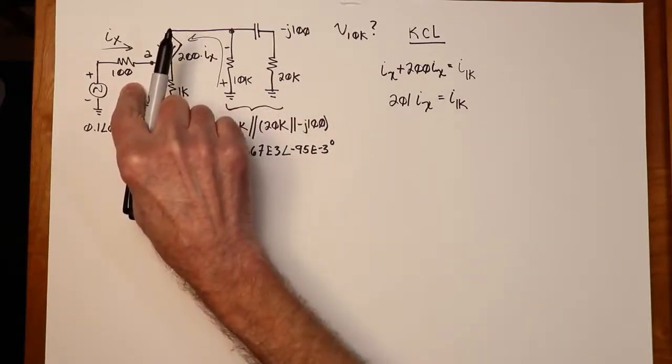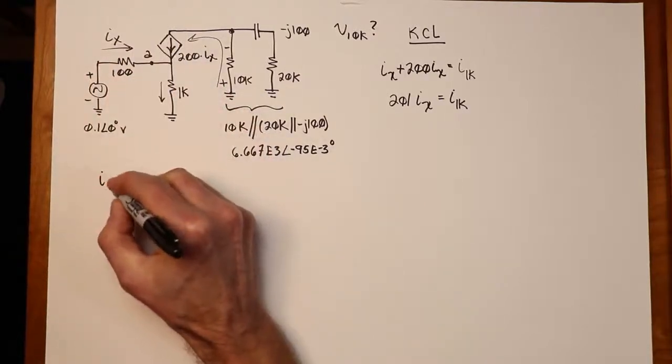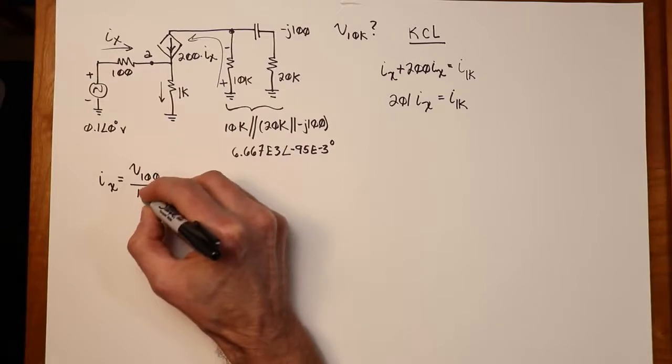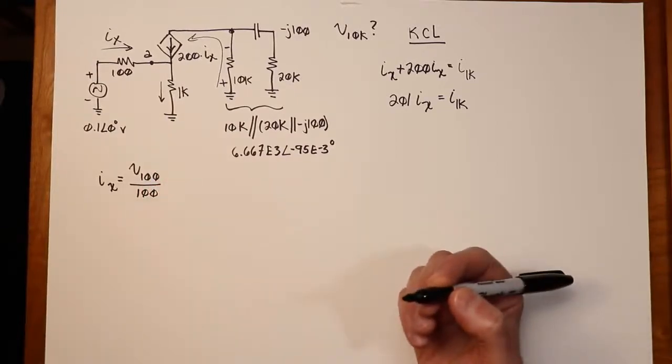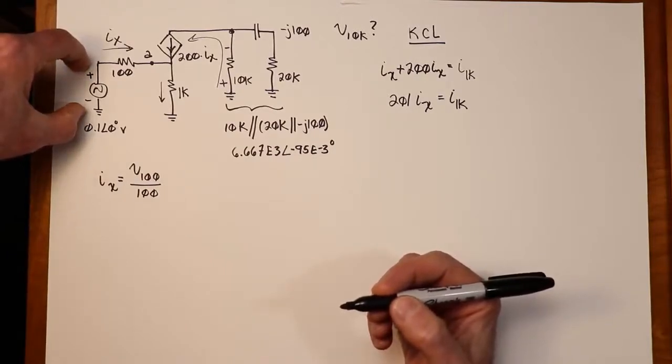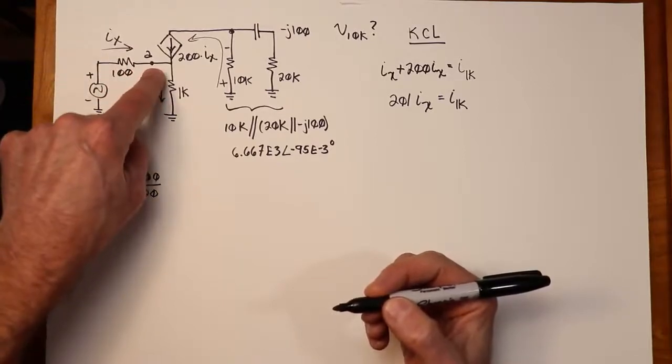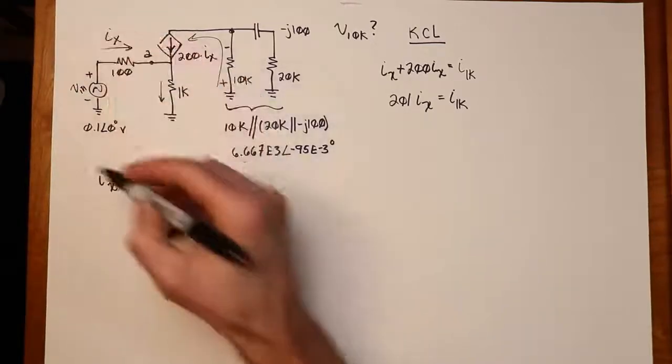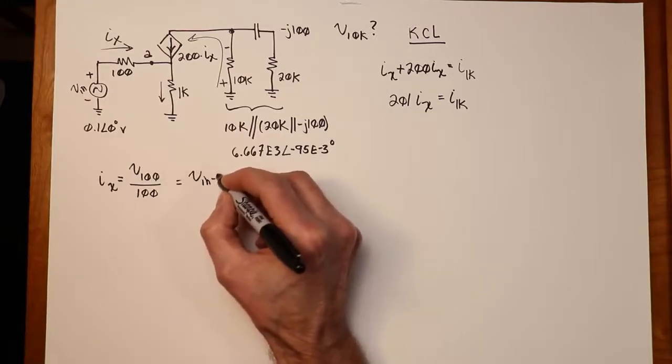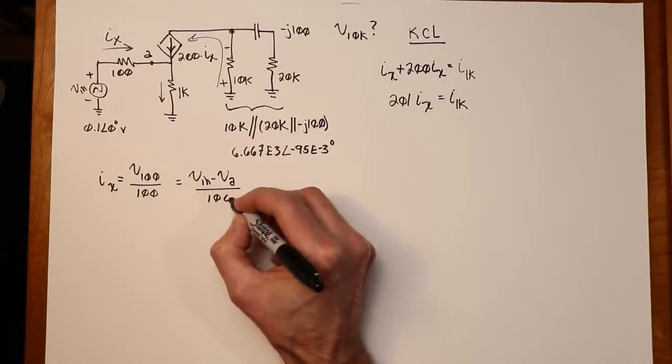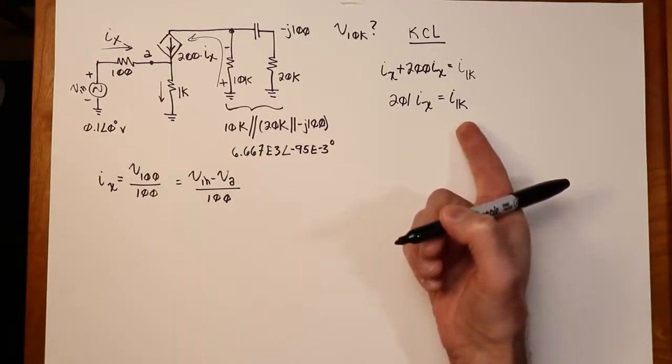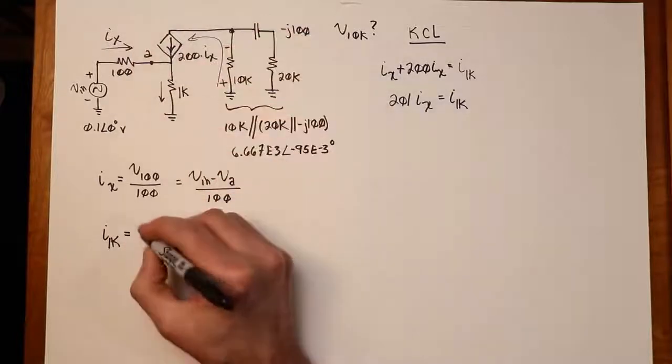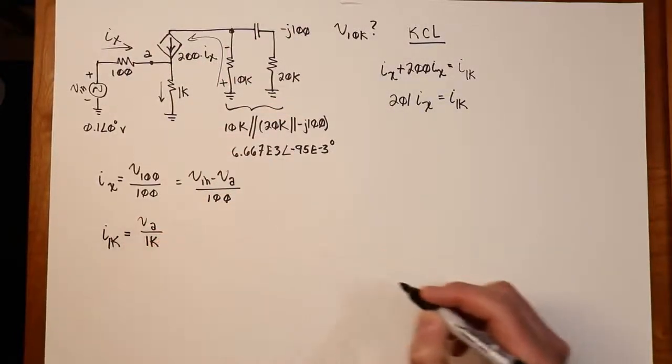What we would usually do at this point is start to write these currents in terms of their Ohm's law equivalence. So what is ix in this case? Coming back over here, ix is the voltage across the 100 Ohm. I'll just say, ix is the voltage across the 100 Ohm divided by 100 Ohms. So what's the voltage across the 100 Ohm? It's this V in, V source, whatever you want to call it, this 0.1 volts minus V A. Let's just call this V in. So that's going to be V in minus V a divided by 100 Ohms. Now, what is i of 1k? That's just V A over 1k. Just straight Ohm's law sorts of computations here.